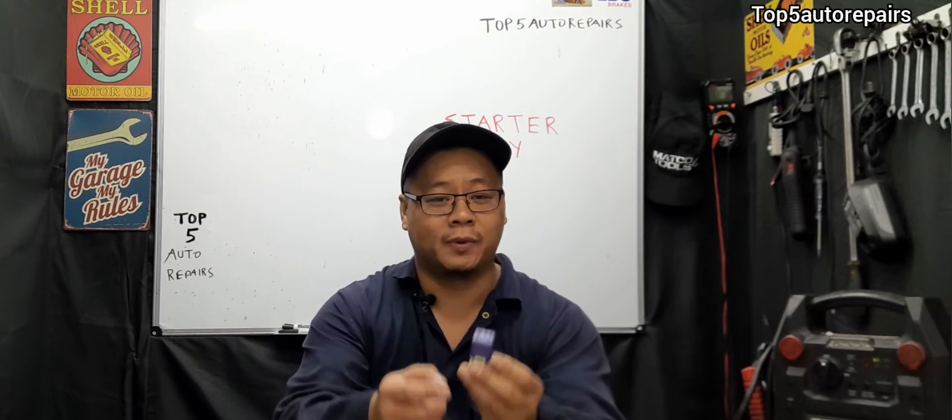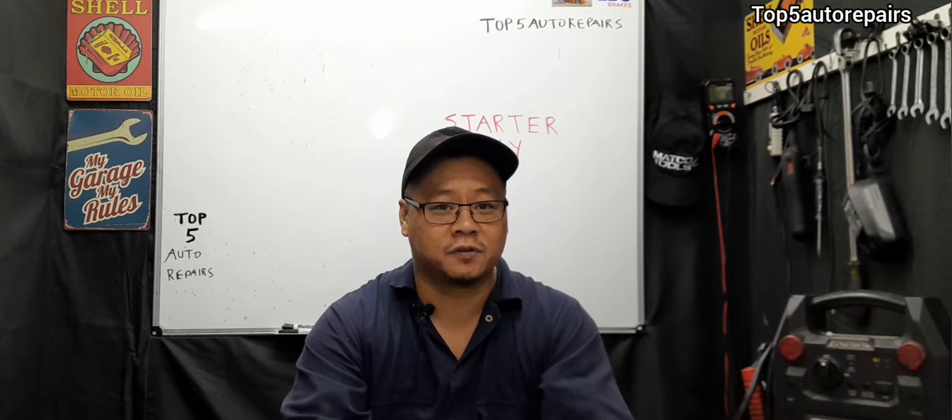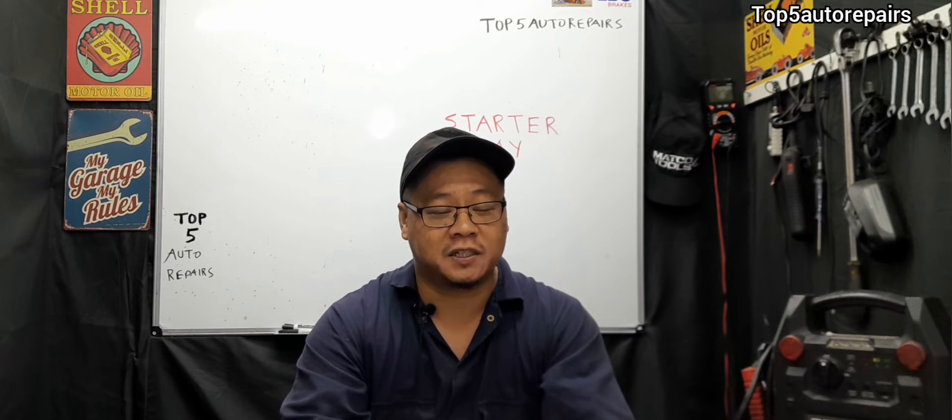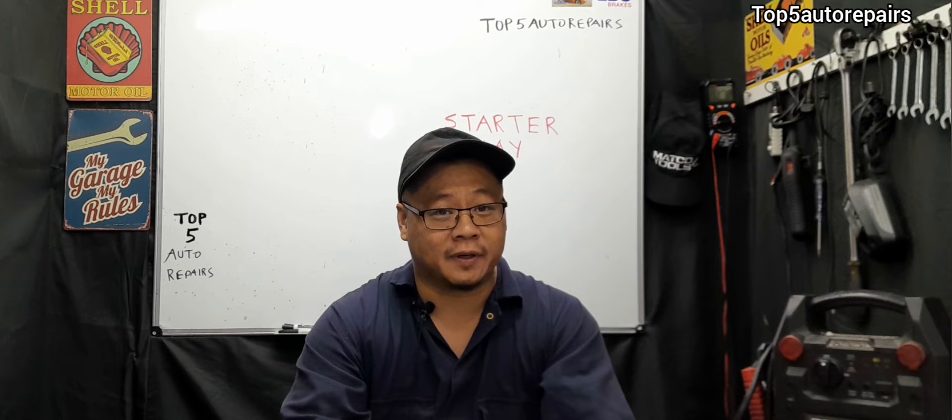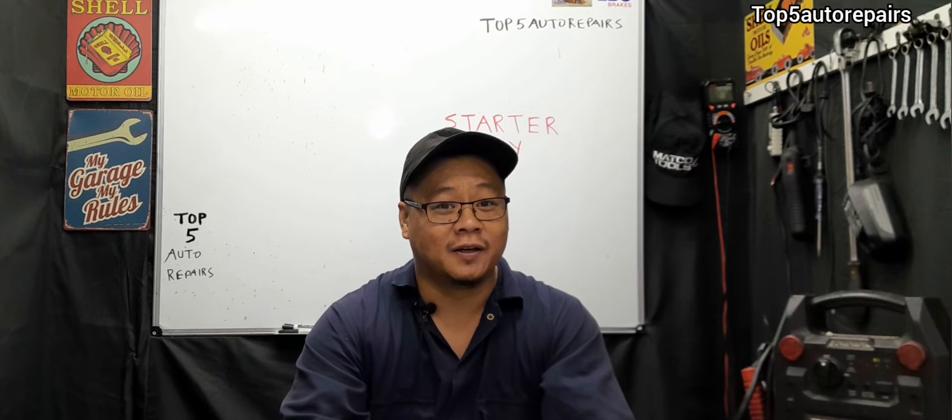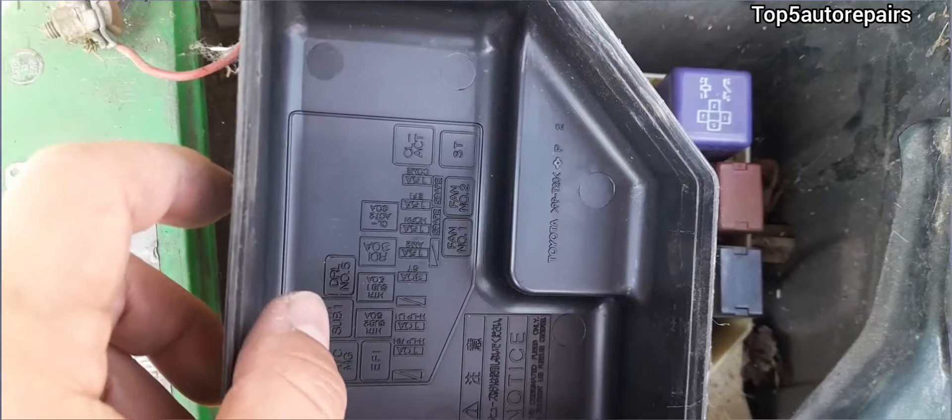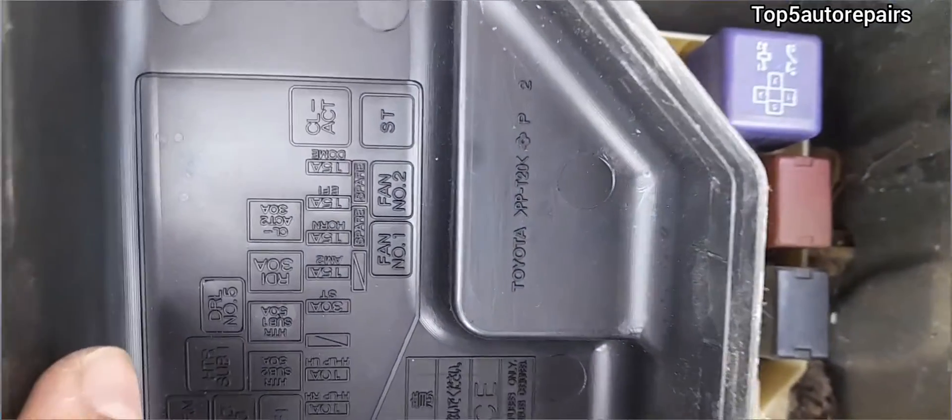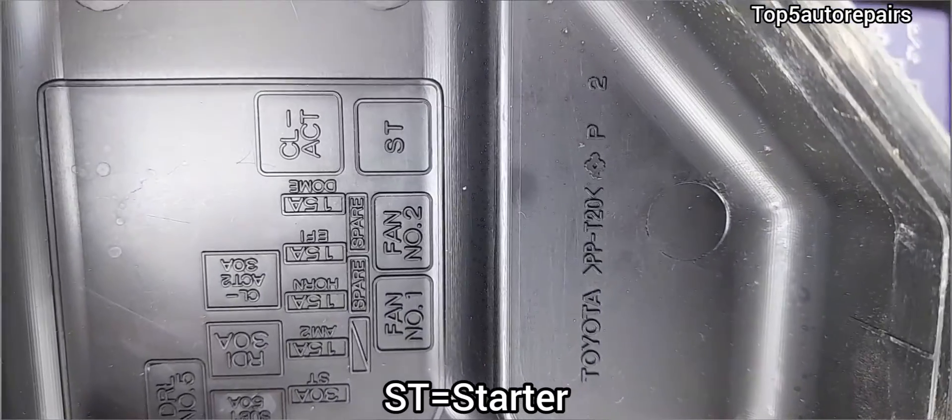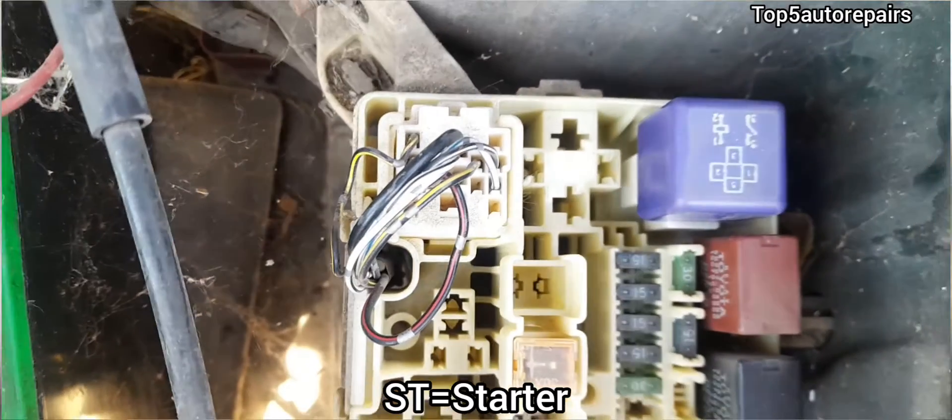The starter relay normally is located right in the fuse box underneath the dashboard and sometimes in really weird spots right behind the radio. When you locate the fuse box, make sure to look underneath the cover. It will tell you exactly where the starter relay is located.